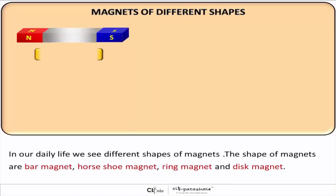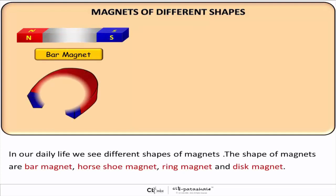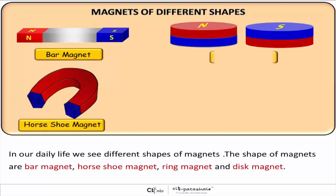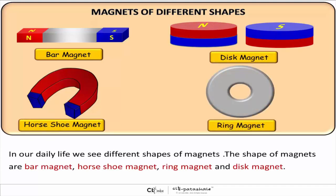In our daily life, we see different shapes of magnets. The shapes of magnets are bar magnet, horseshoe magnet, disc magnet and ring magnet.